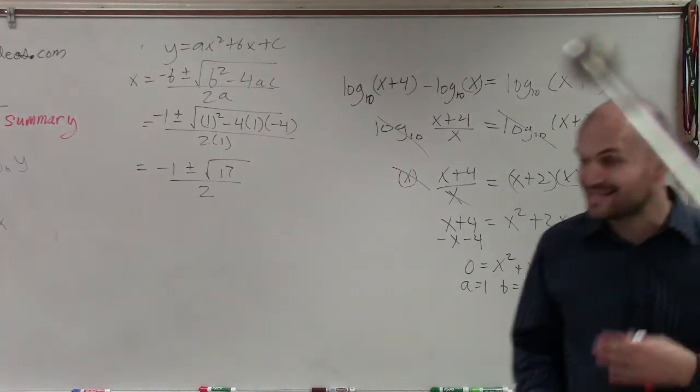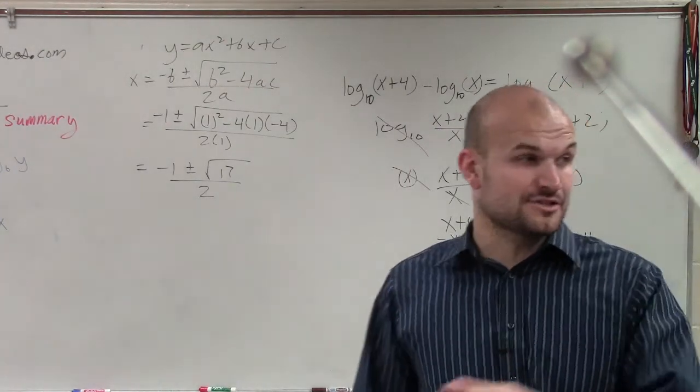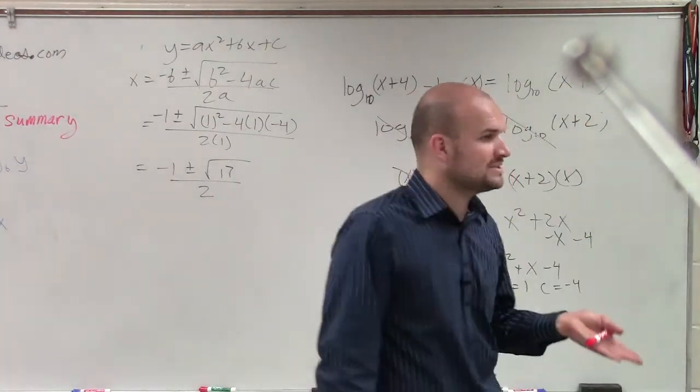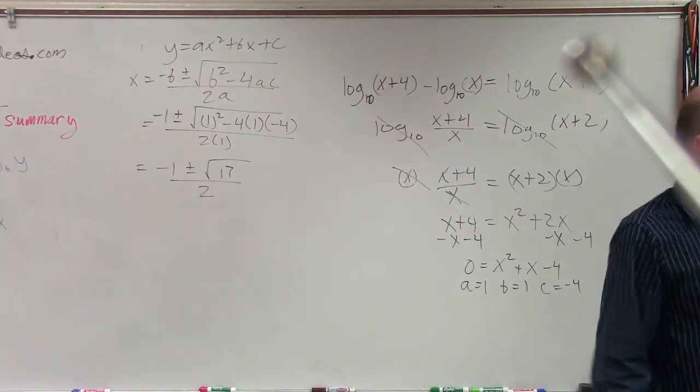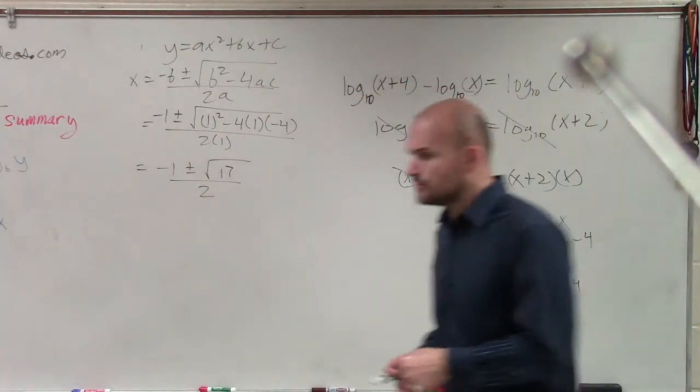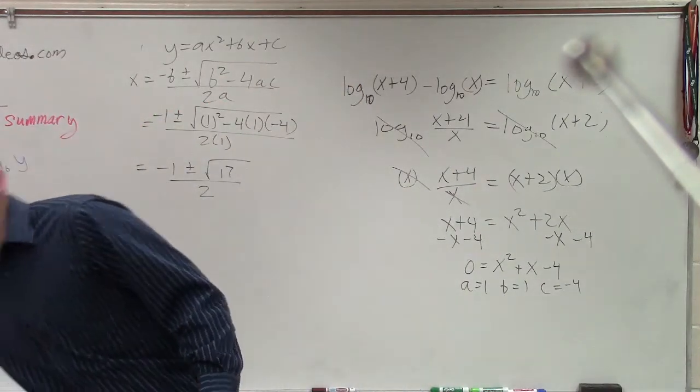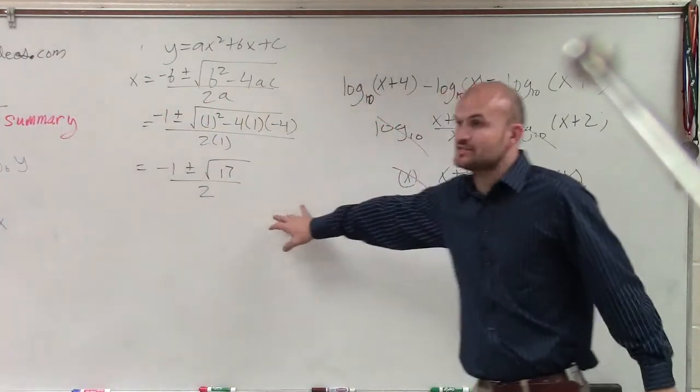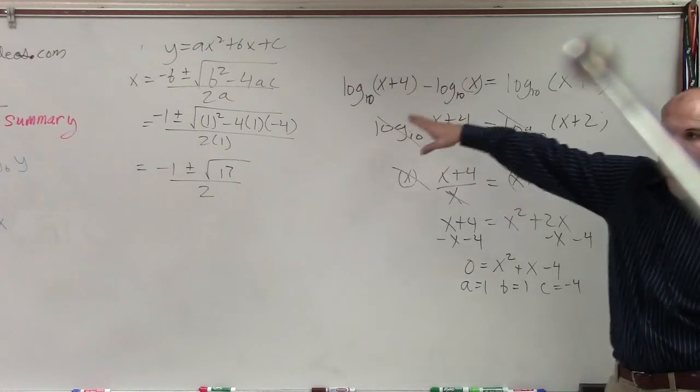So you have negative 1 plus or minus the square root of 17 divided by 2. Now, you're going to have a positive and a negative answer. Now, I know their answers are going to be irrational. But remember, when we're checking for extraneous solutions, we're going to take whatever these answers are, and we're going to plug them into this equation.